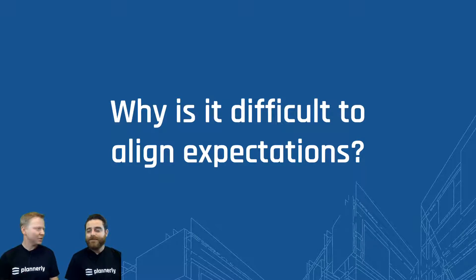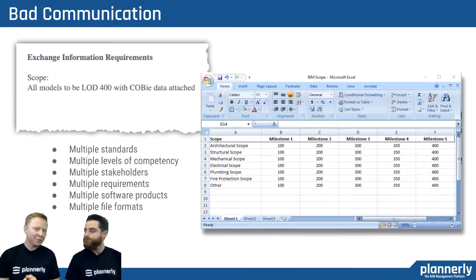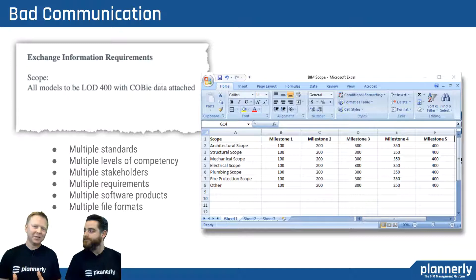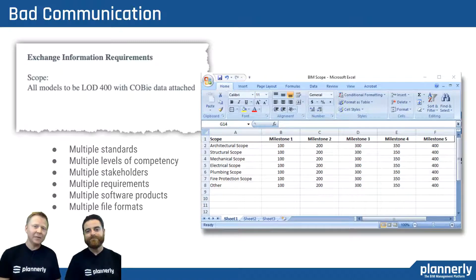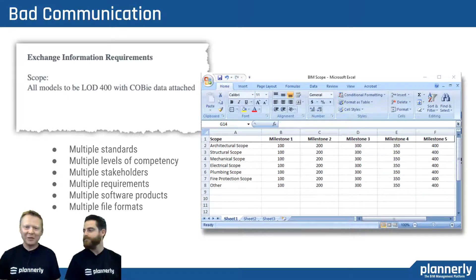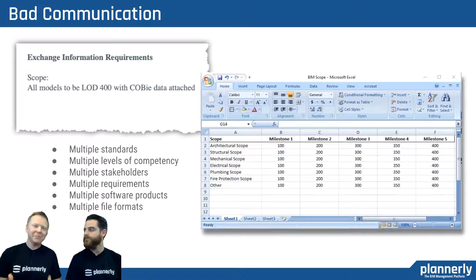So why is it so tough to align expectations? Take a look. Bad communication is a big one, and we see this a lot. Here are a couple of examples of really poorly defined scope. The first one is a one-liner — a lot of people have seen this in contracts where the owner or somebody is requesting BIM and it's just a vague statement, maybe with some kind of LOD reference. But using LOD numbers with a progression from one milestone to another — 100 to 200 to 300 — it just doesn't work like that on a project. It's a misconception that really does create bad communication about what the expectation is, what's possible, and what should be requested.